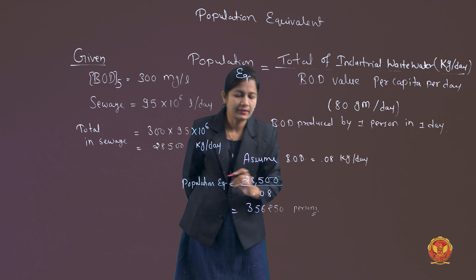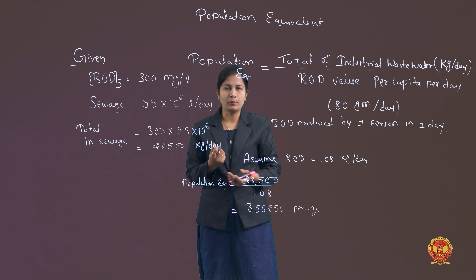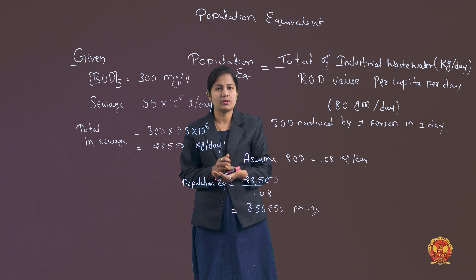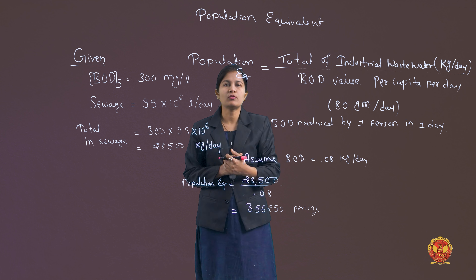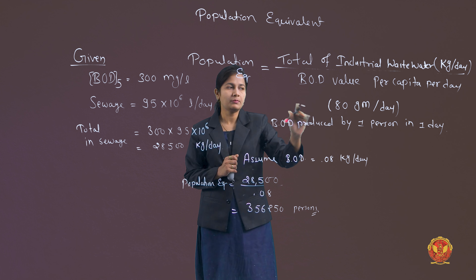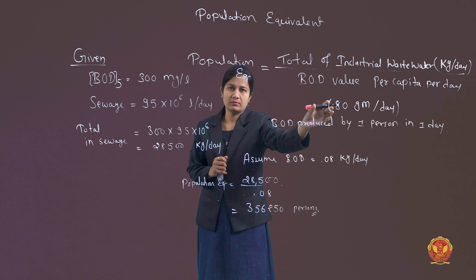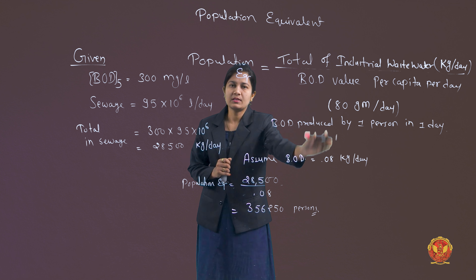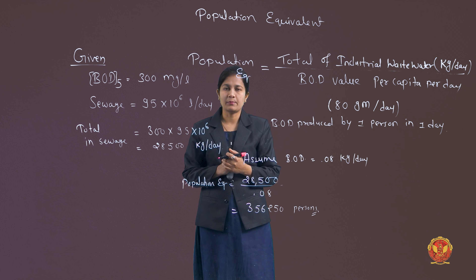That is the final answer. To solve population equivalent, just remember the formula and remember the BOD produced by one person in a day, which is 80 grams per day. Thank you.